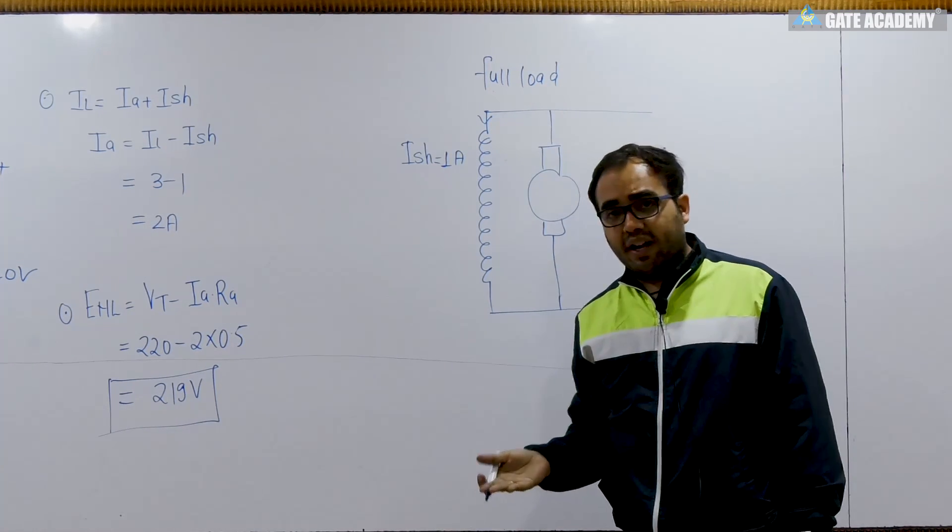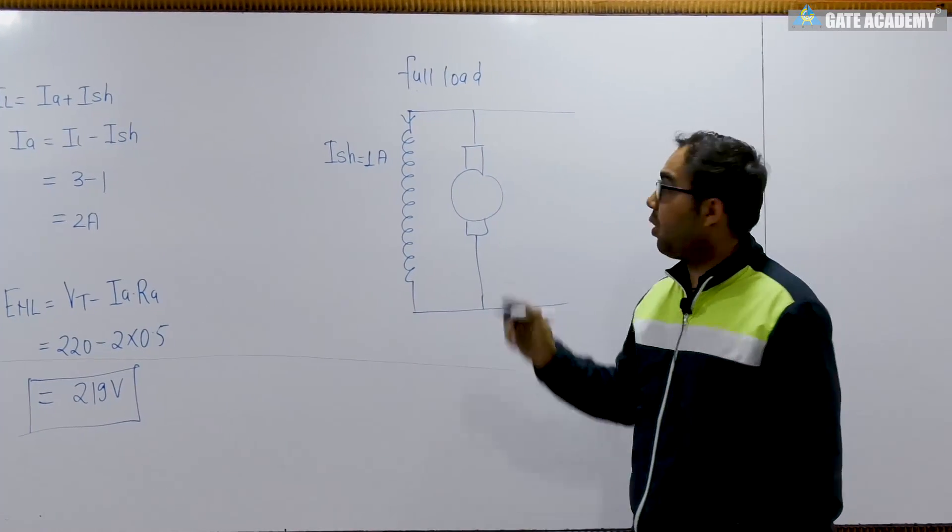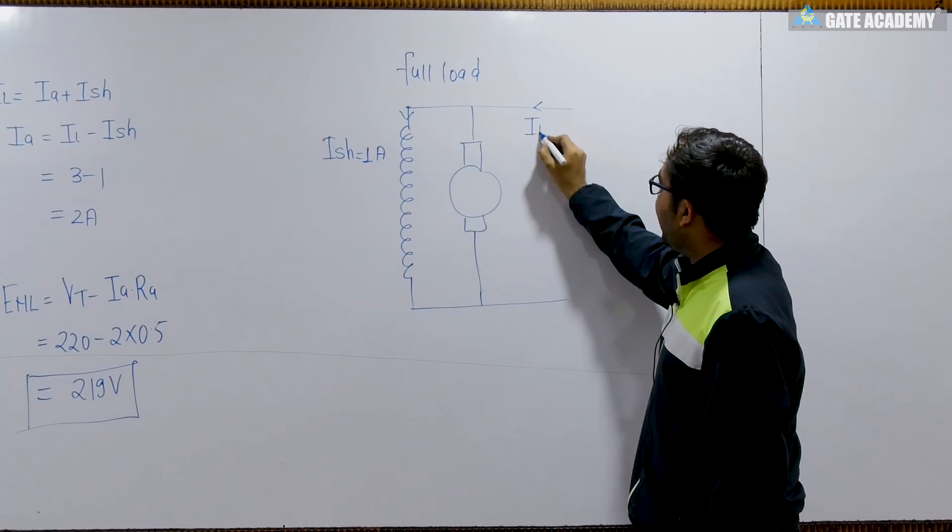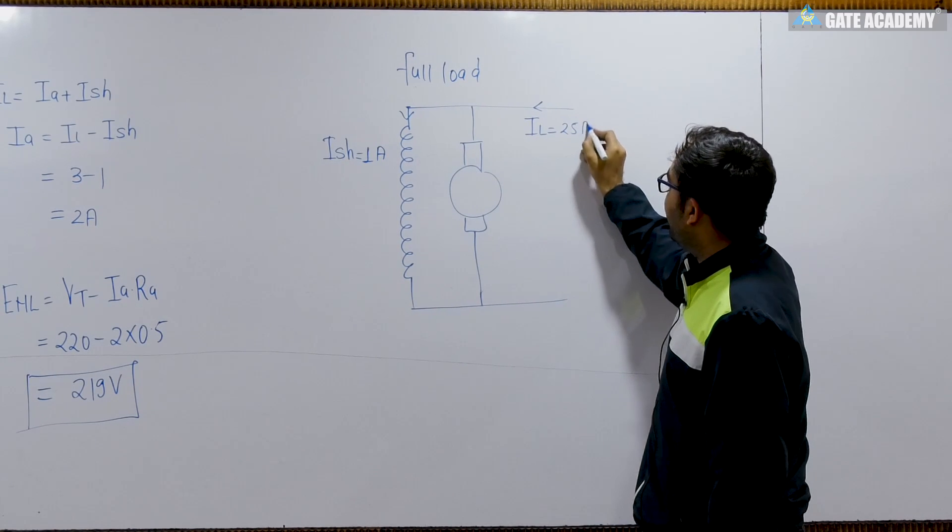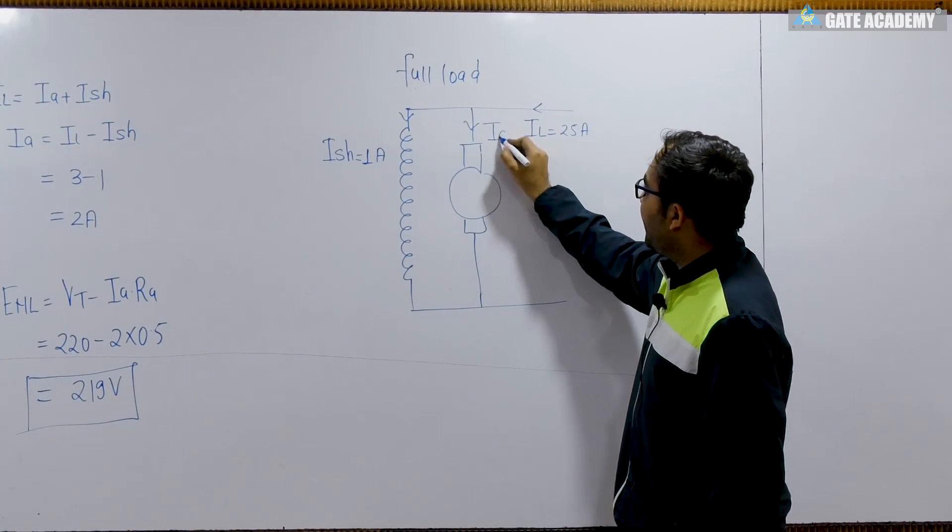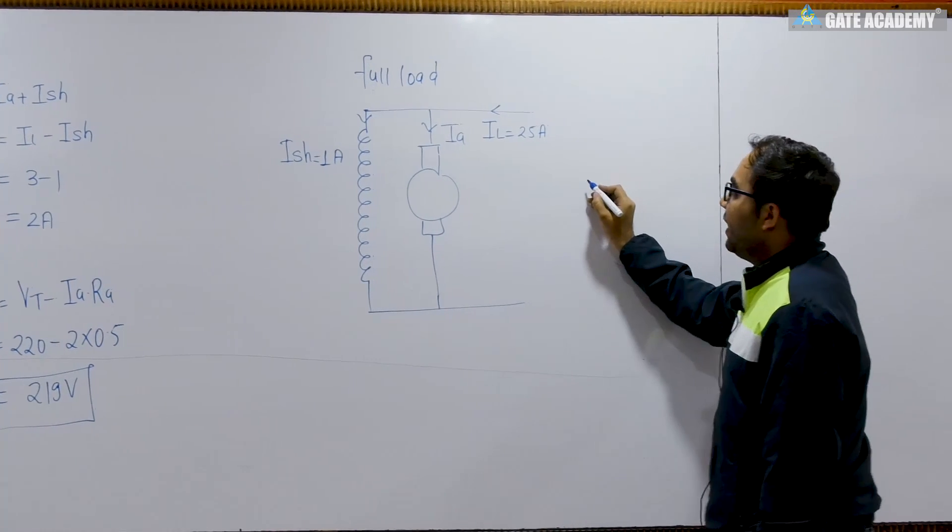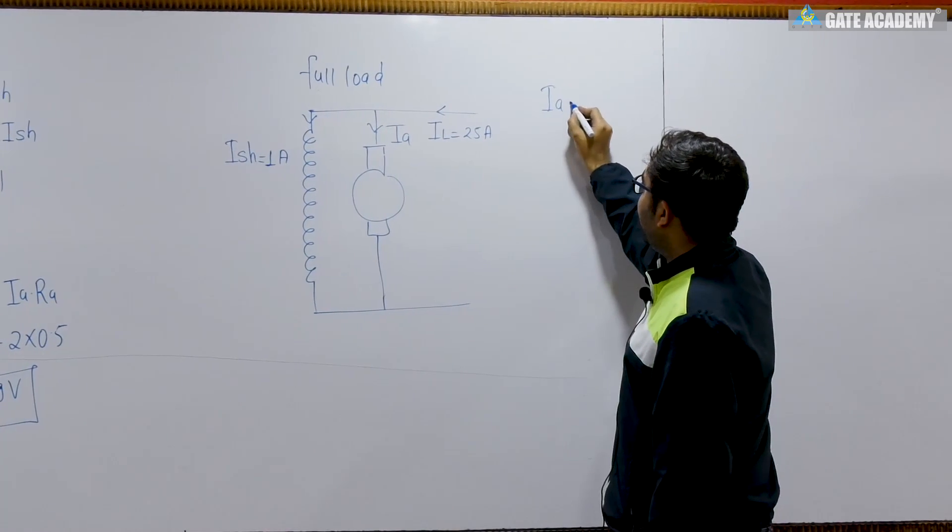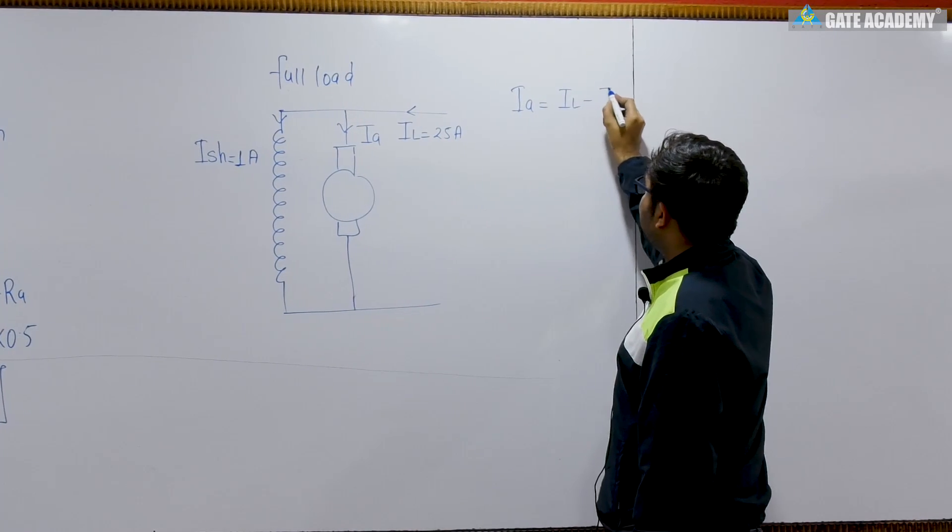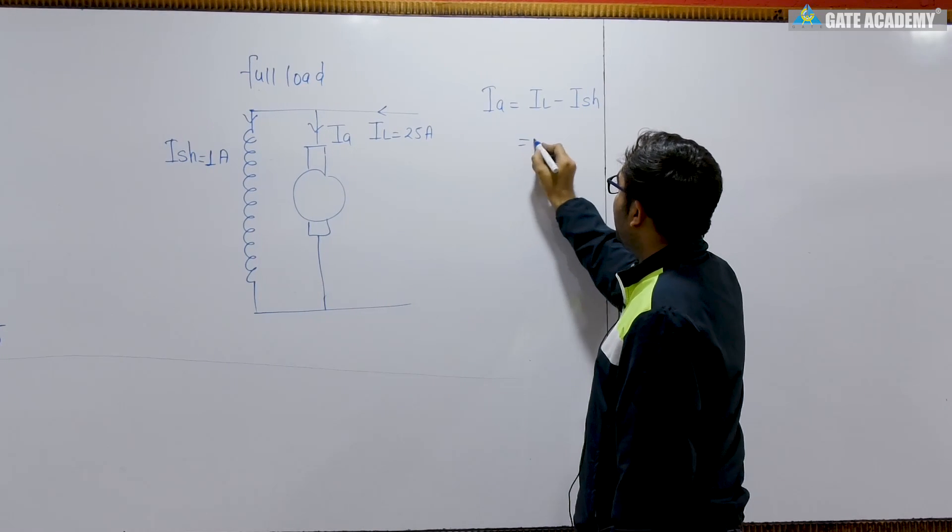Now the only quantity is the load is added in the shunt motor. If the load comes up, so it is quite obvious IL ki value is 25 ampere given at full load. Now we can find the armature current at full load. So if we apply the KCL here, the value of Ia will be equal to IL minus Ish.